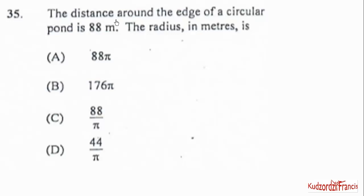The distance around the edge of a circular pond is 88 meters. The radius in meters is. So we know the distance around the circular pond is the circumference of the pond, which is given by C = 2πr, where r is the radius of the circle.